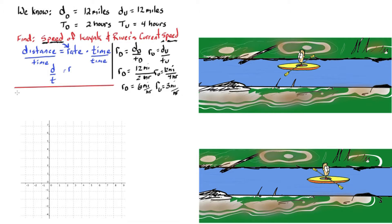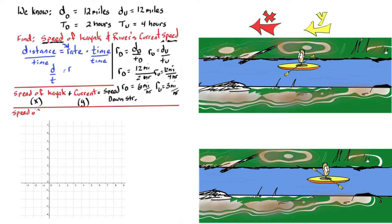So we can put this in a linear system. The speed of the kayak plus the river current equals the speed downstream. And the speed of the kayak minus the speed of the current equals the speed upstream.